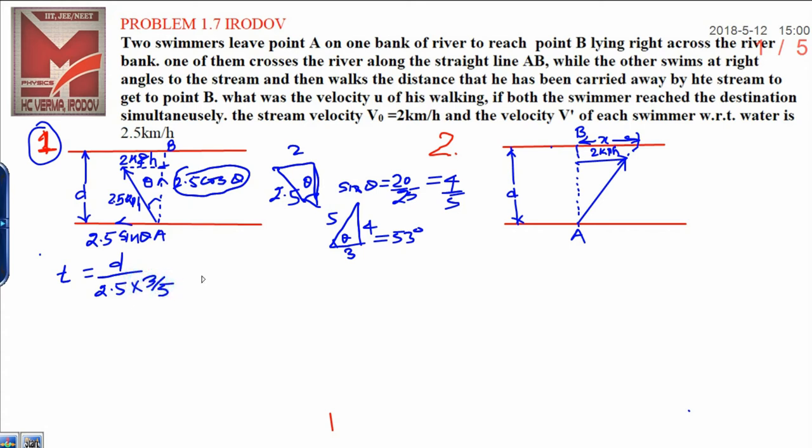Solving this, t1 is equal to d upon 1.5. Let this be equation 1. Similarly for swimmer 2, you will see here first of all he has to go up, then walk back a distance x and reach at point B.